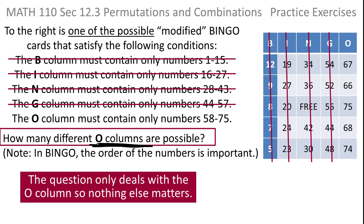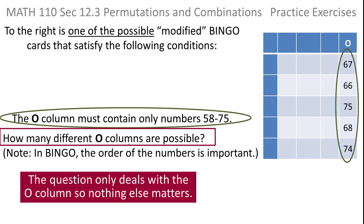When you see a problem with lots of information, if there's something that allows you to ignore any part of it, you're ahead of the game. So basically I can forget everything but the O column — I'm not feeling information overload anymore. The O column must contain only the numbers 58 through 75. This is just one possible arrangement; if you did it again you'd get a different set of numbers, but all those numbers are between 58 and 75.